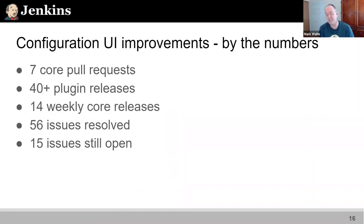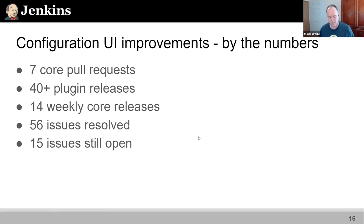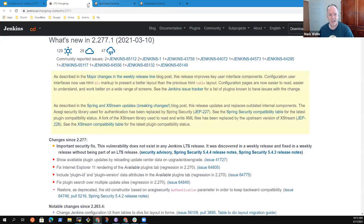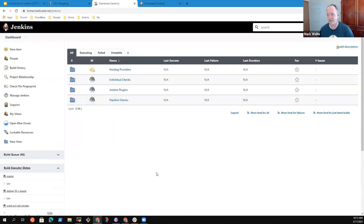This improvement involved seven core pull requests, 40-plus plugin releases, 14 weekly core releases to get here, and 56 issues resolved. There are 15 issues still open. Let's take a look at my Jenkins in my live environment.